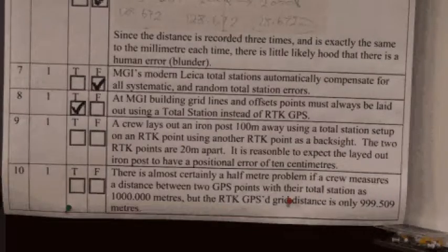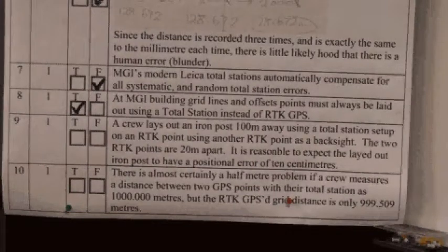Question number nine. A crew lays out an iron post 100 meters away using a total station set up on an RTK point using another RTK point as a backsight. The two RTK points are 20 meters apart. It is reasonable to expect the laid out iron post to have a positional error of 10 centimeters.